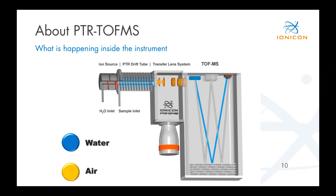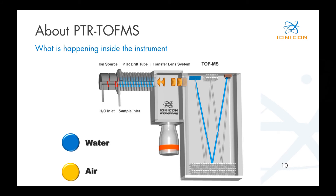After the ion source, the H3O+ is injected into the so-called drift tube — some people also call this the reaction region — and you also have a sample inlet into this drift tube. This sample inlet is constantly drawing in outside air containing your molecules of interest. In the drift tube, the H3O+ reacts with all compounds that have a higher proton affinity than water and transfers its proton to the compound of interest. At the end of the drift tube, you end up with the ionized compound of interest, which is then transferred into the transfer lens system. This system differs depending on the model: conventional transfer lens system, ion guide, or ion funnel.